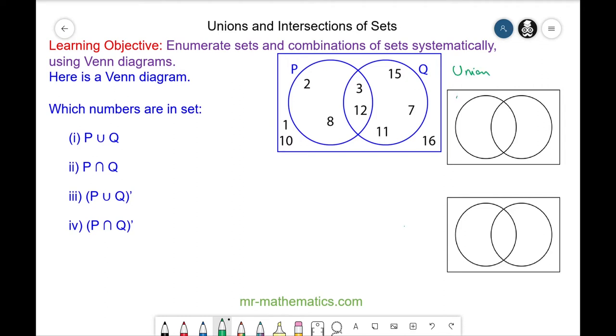Looking at the sets of A and B, the union is the area contained within the two sets or within the two circles, and the symbol for union is this. The intersection of two sets A and B is the area where the two sets or circles overlap.